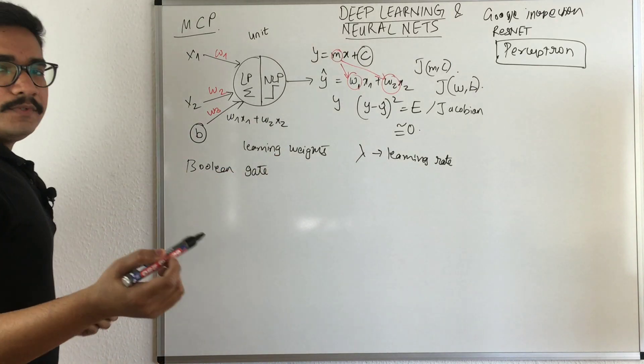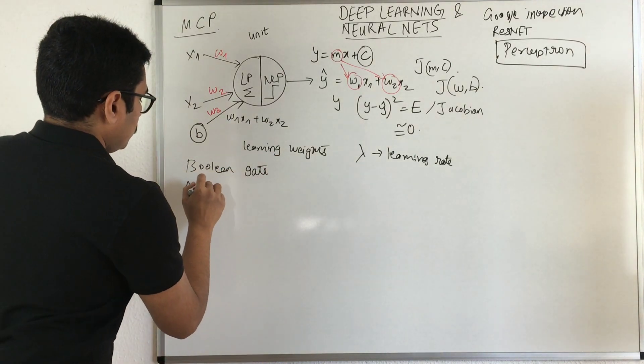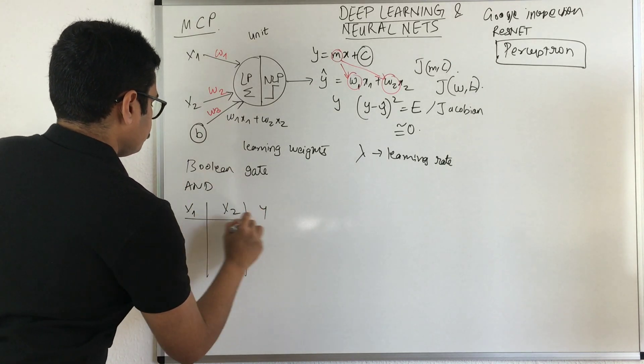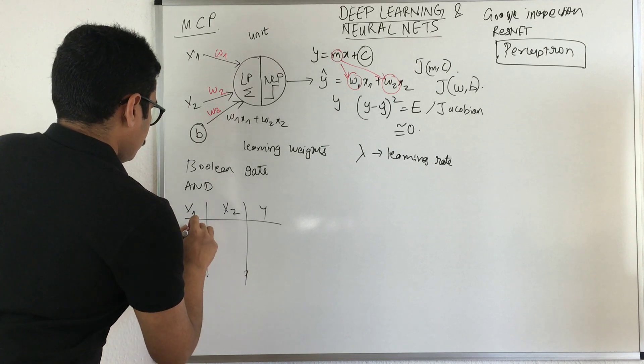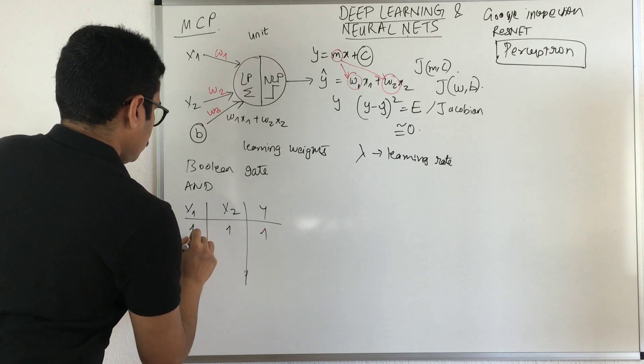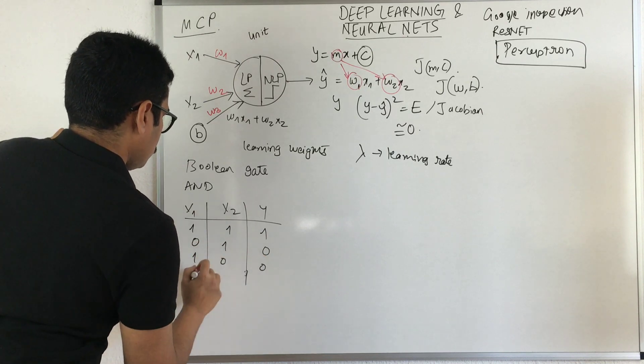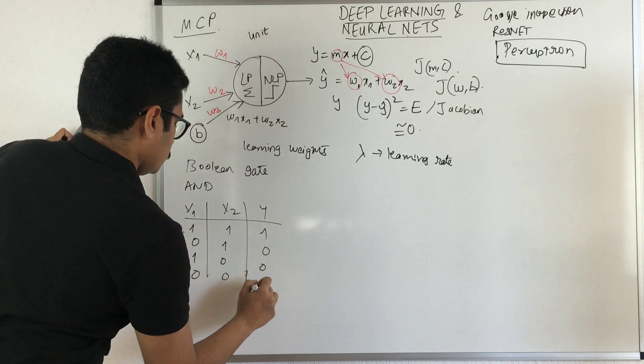Their target goal was to implement a Boolean gate. They started with the AND gate. We have X1 and X2 and Y.